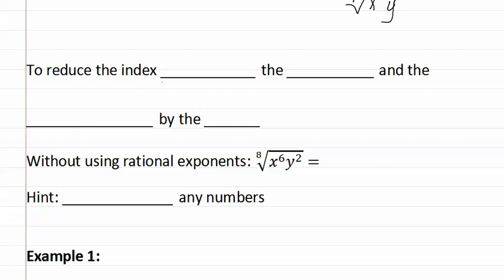So instead, to reduce the index, we simply divide the index and the exponents by the GCF or greatest common factor.